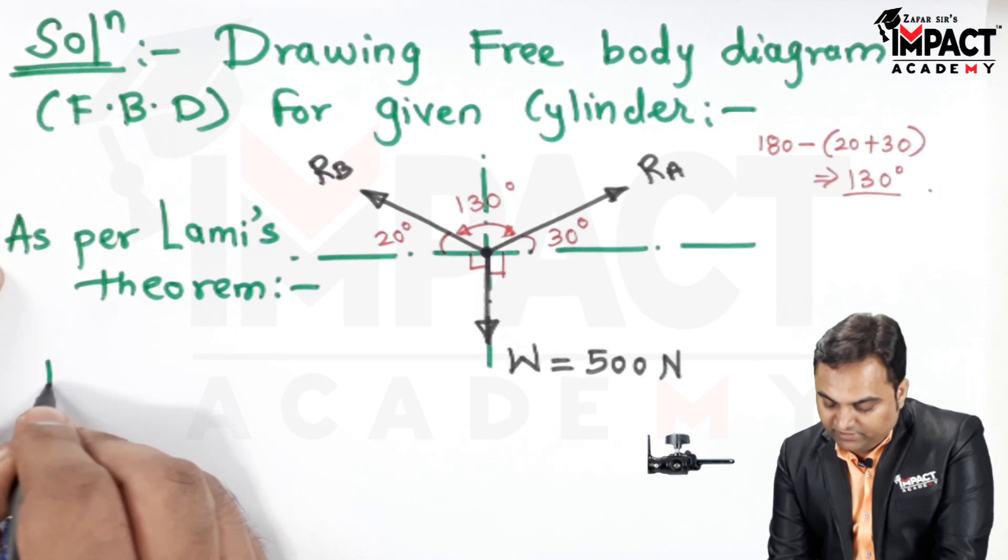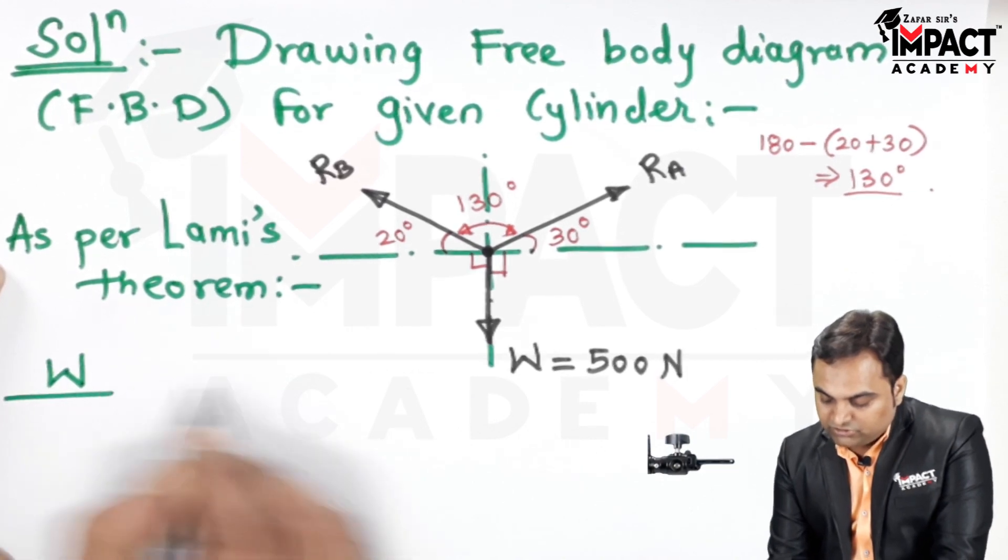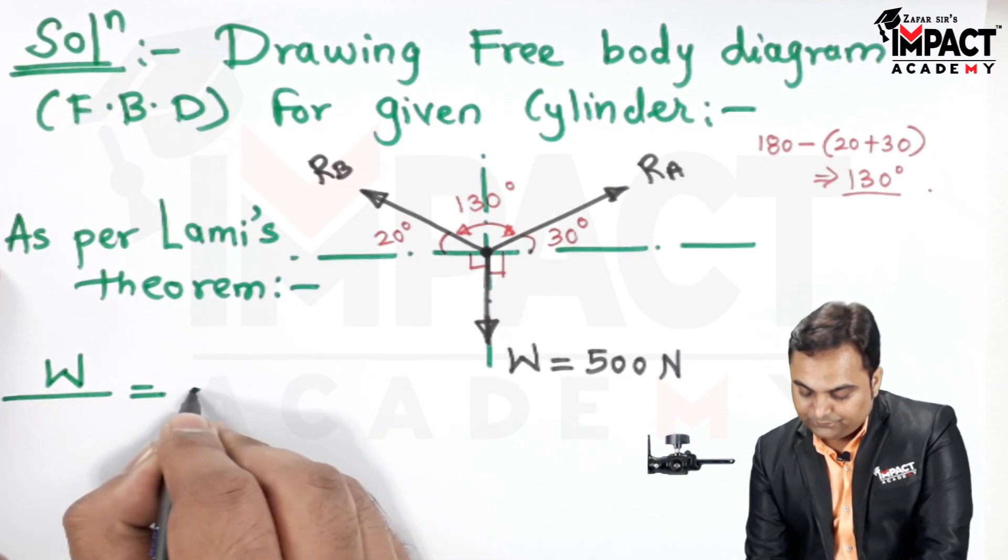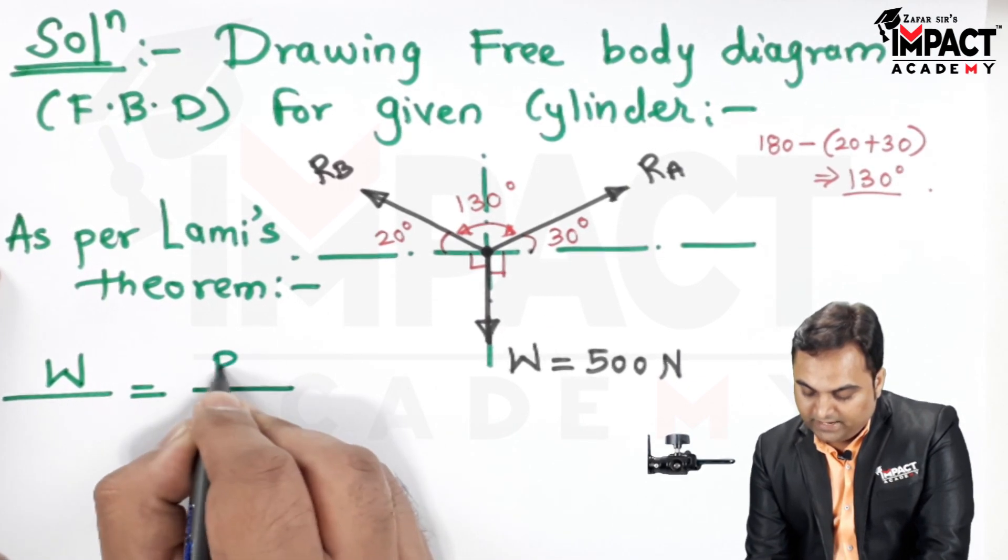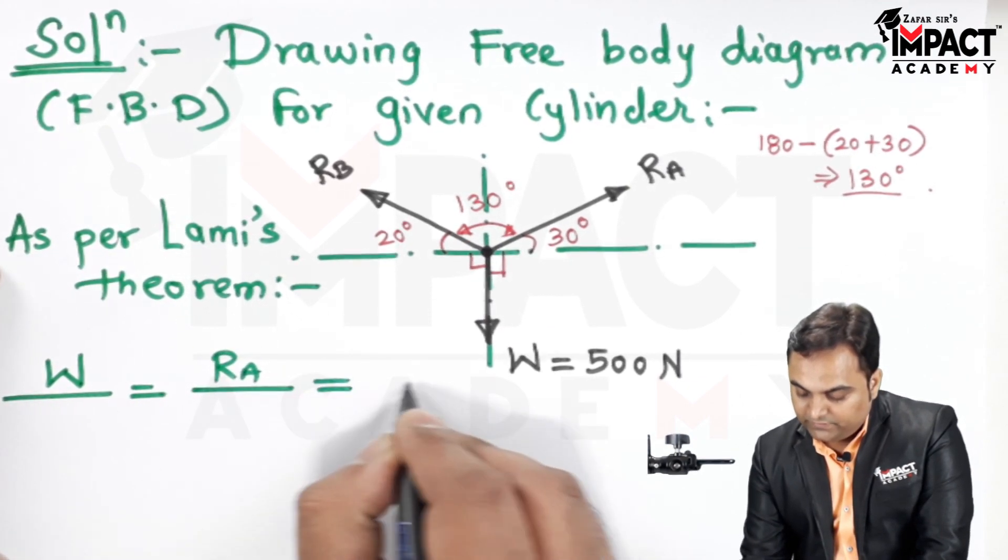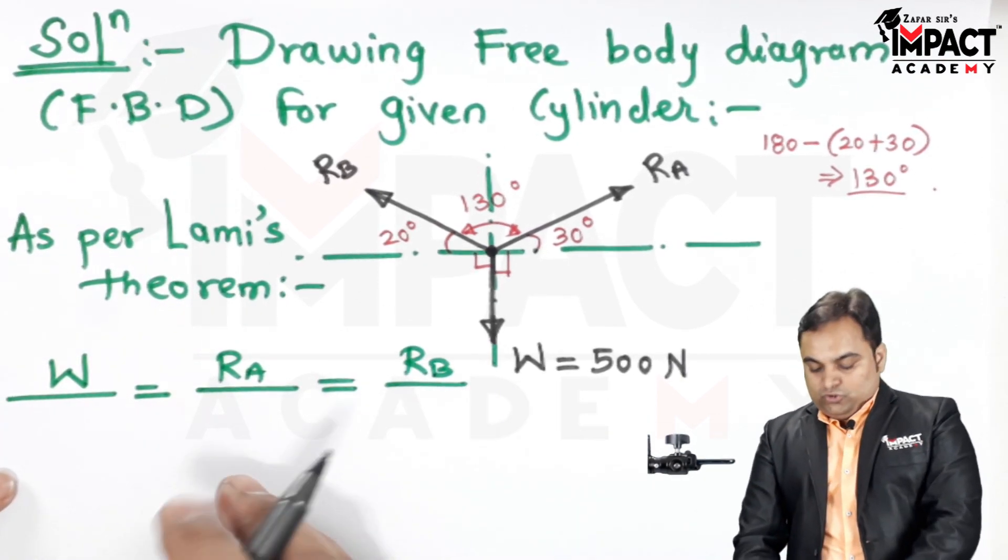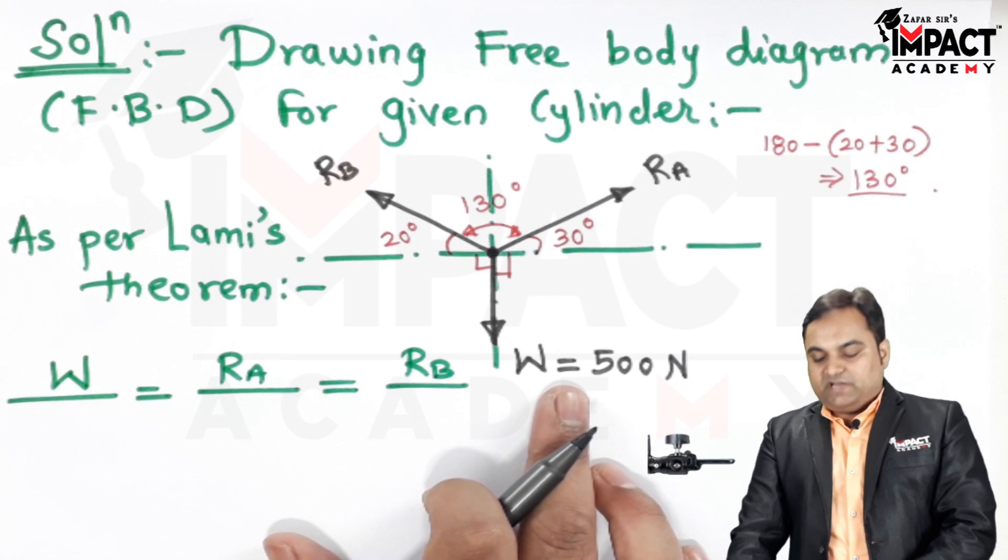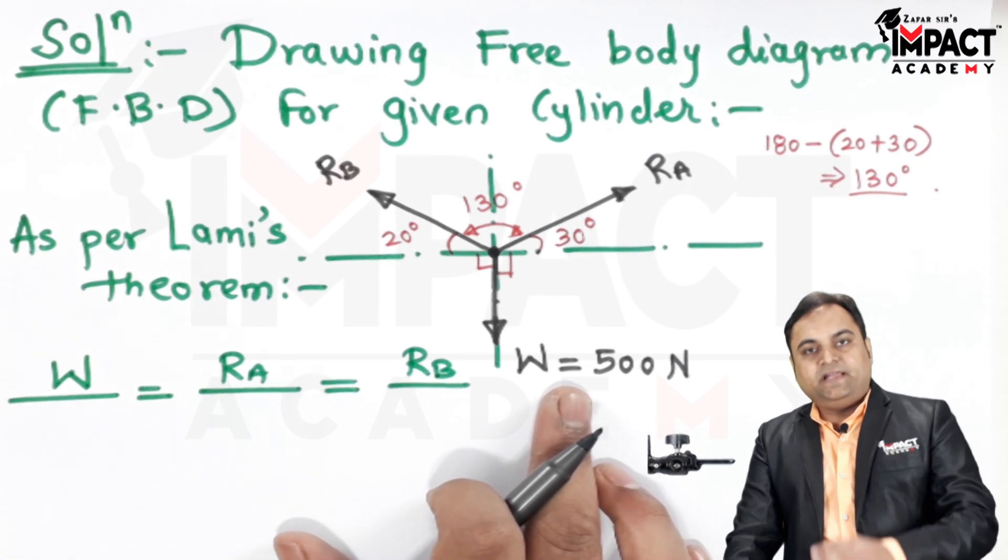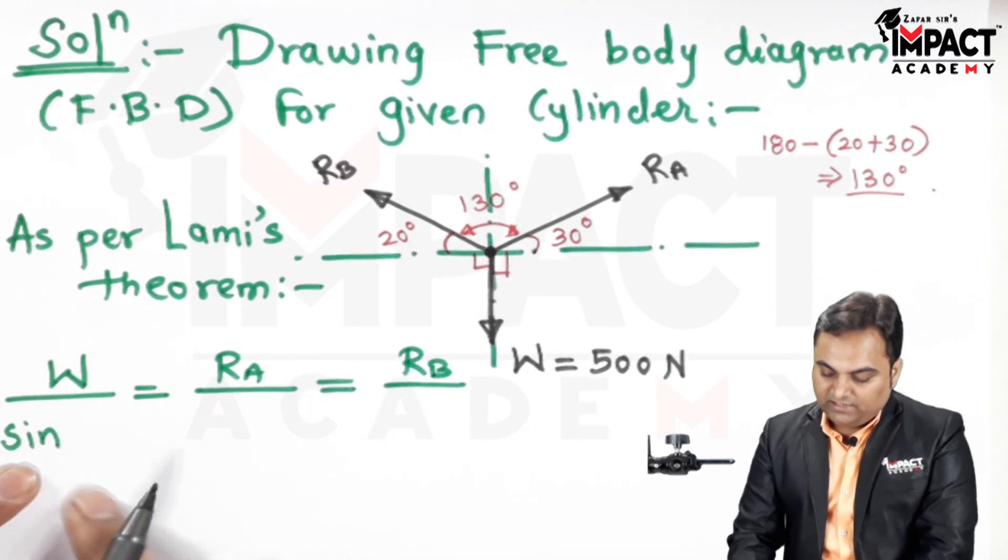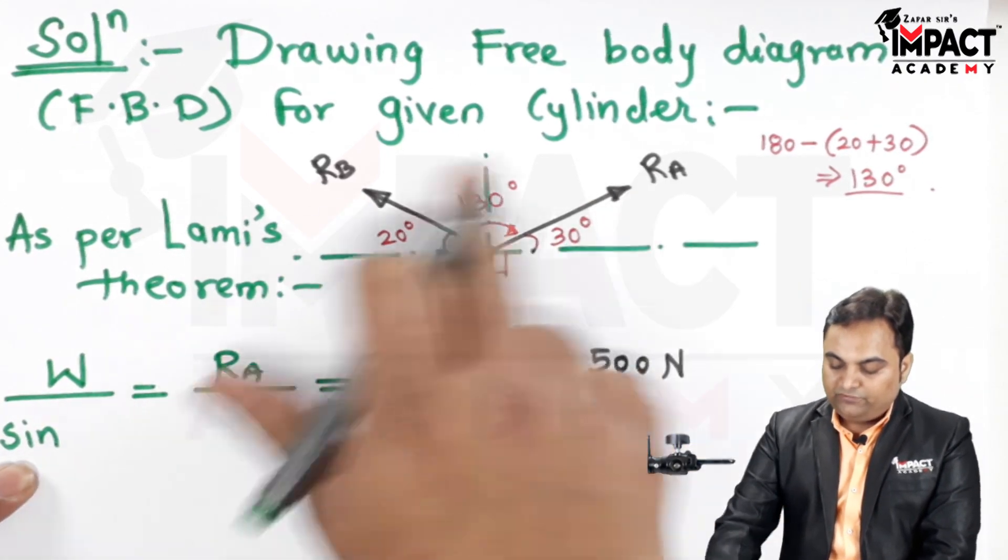It says that if we have a force starting with W, then reaction at A, next reaction at B, so the force is directly proportional to the sine of the angle between the other two forces. So in the denominator of W, sine of angle between the other two forces which is RA and RB, so it is sin 130.